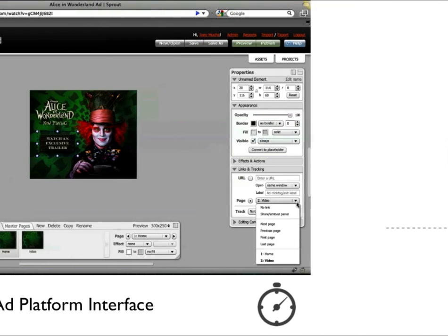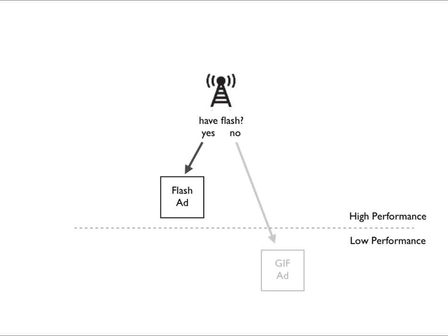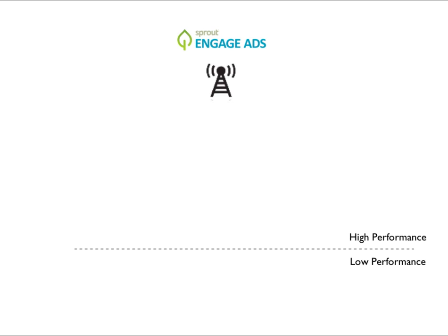Let's look at what happens when these ads are served. If you had a traditional display ad served in a mobile context, the ad would determine if it could place Flash, and if not, it would place a backup static GIF image. With Sprout, however, it asks if it has Flash, and if so, places a Flash ad.